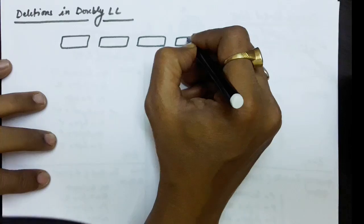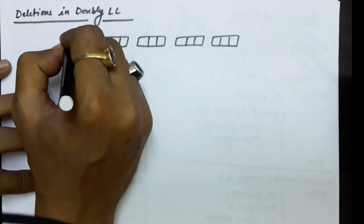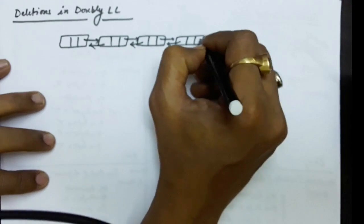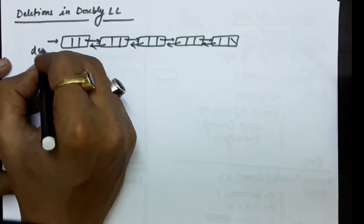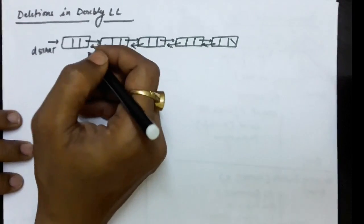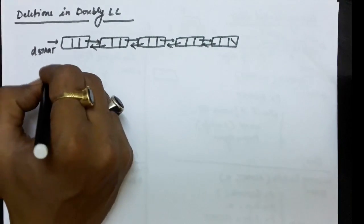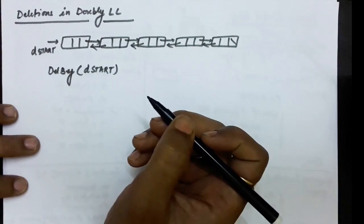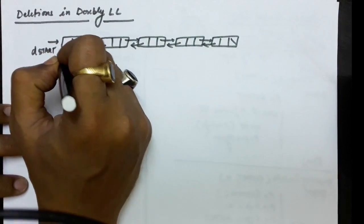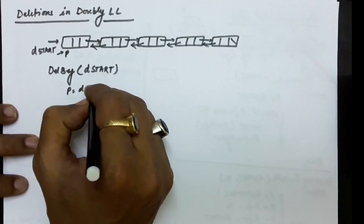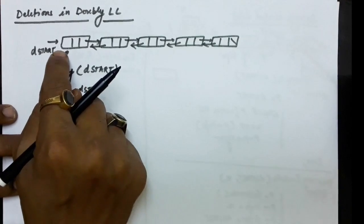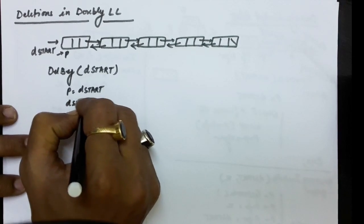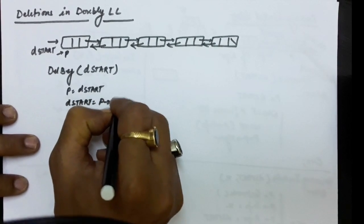Suppose this is the doubly linked list given to us. Let's say this is D_start and you have to delete the first node. Deletion of the first node means you are performing the delete-beginning operation. The only thing given to you is the address of the first node. In case you have to delete this node, let's say this node is P. After the deletion of this node, D_start will shift to the next node, so D_start comes to the second node. So D_start equals P dot next — both will work.